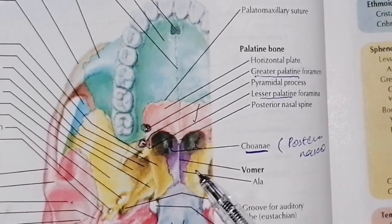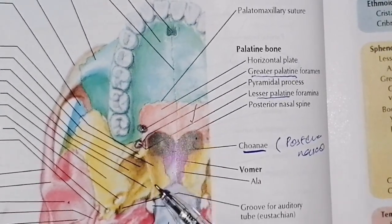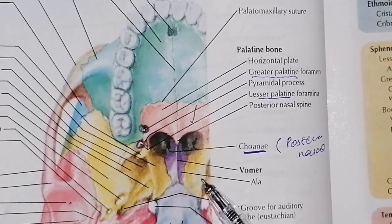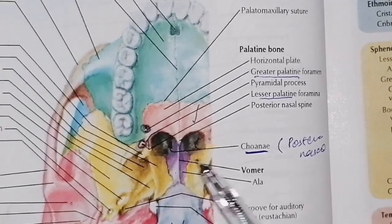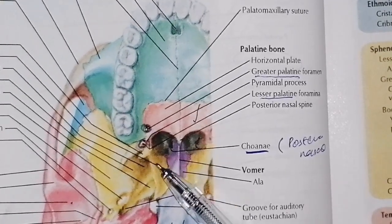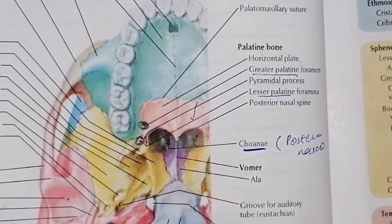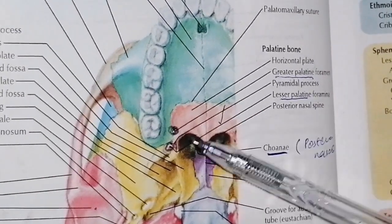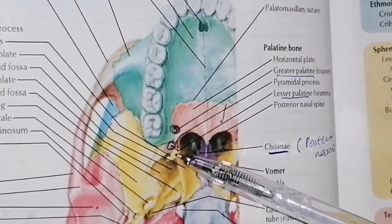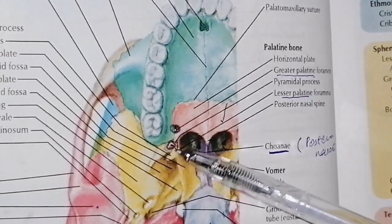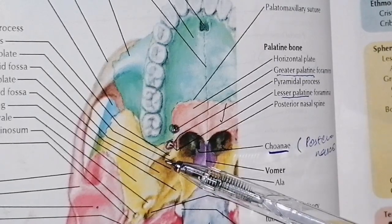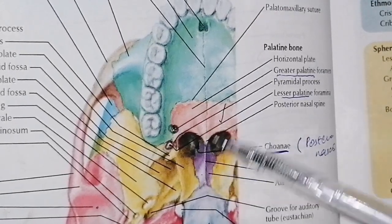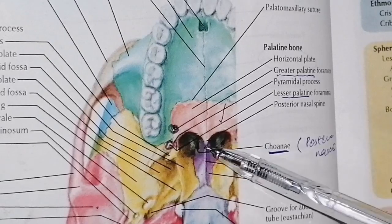The inner side is the medial pterygoid plate and the outer side is the lateral pterygoid plate. The medial pterygoid plate is prolonged and has a spike-like projection called the hamulus.